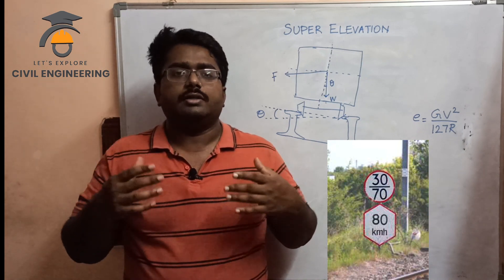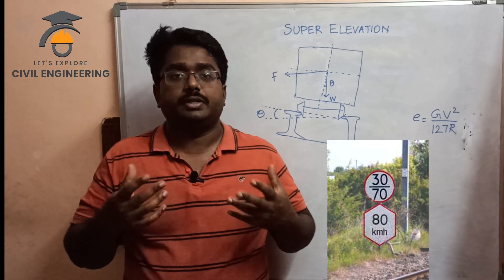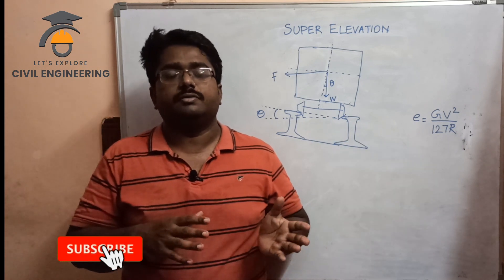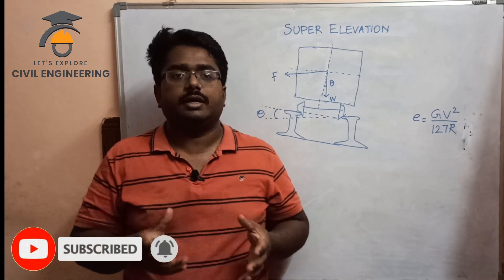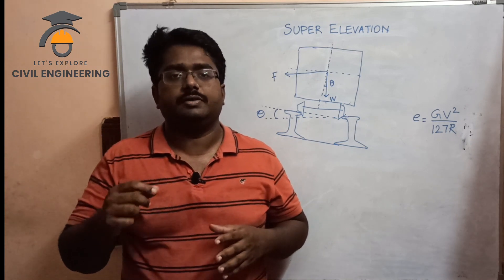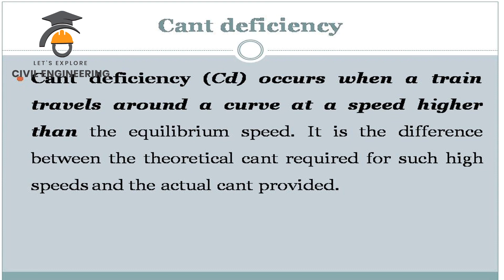Suppose the speed is low, the centrifugal force is low. This situation is called cant deficiency. Cant deficiency is defined as when the train travels around the curve at a speed higher than the equilibrium speed. It is the difference between the theoretical cant required for such high speed and the actual cant provided. The actual cant is the super elevation.